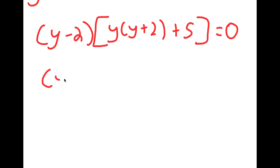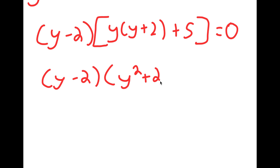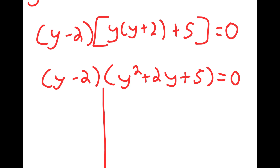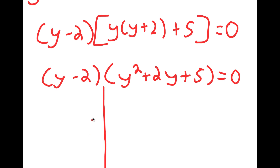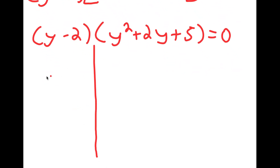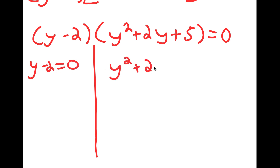So I have y minus 2 times y times y plus 2 plus 5 is equal to 0. And if I simplify this, I get y minus 2 times y squared plus 2y plus 5 is equal to 0. Now I get two equations: y minus 2 is equal to 0, and y squared plus 2y plus 5 is equal to 0.